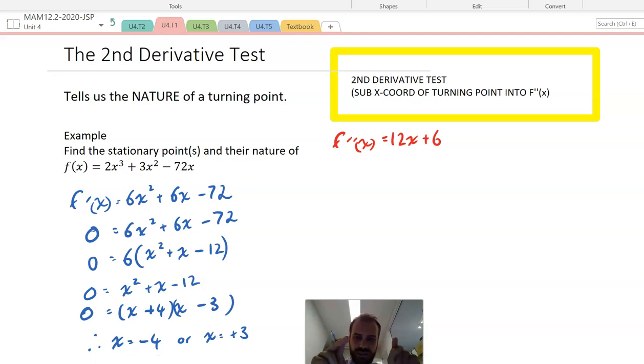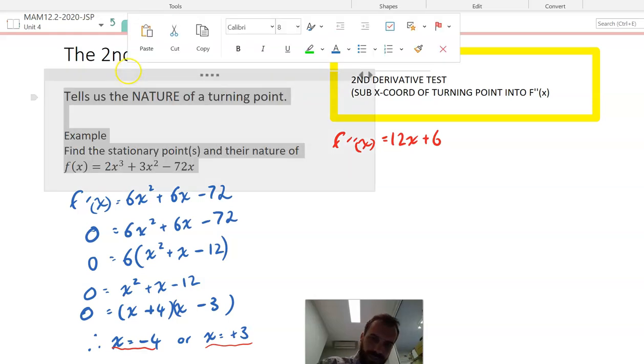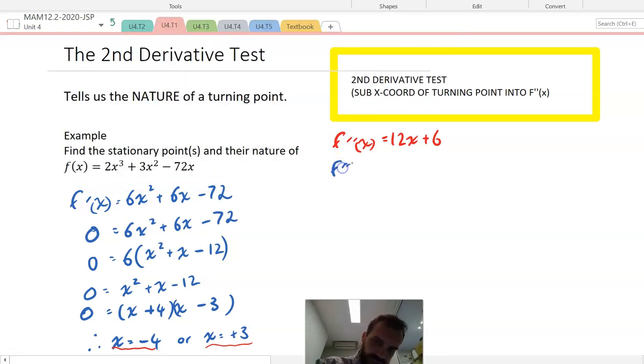So now that we know that f''(x) is equal to 12x plus 6, we'll perform our second derivative test on both of our turning points. And we're going to do it at the same time. So let's do the first one. So f''(-4). That's going to be equal to 12 times negative 4 plus 6. Save that for a minute.